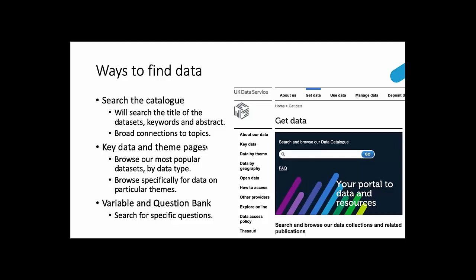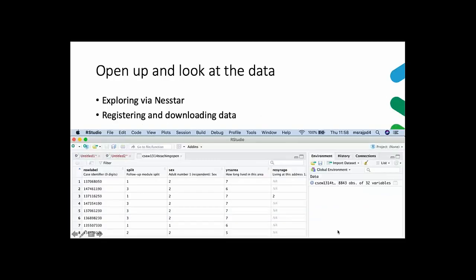Another place to look for data is the Variable and Question Bank, which we'll explore in our activity shortly. You can also open data directly and have a look to see if it tells you what you'd like to see — one way of doing that is to explore via Nesstar, an online tool where many of our data sets are loaded. We did some exploring of Nesstar last week in workshop two and we'll have a brief look again today.